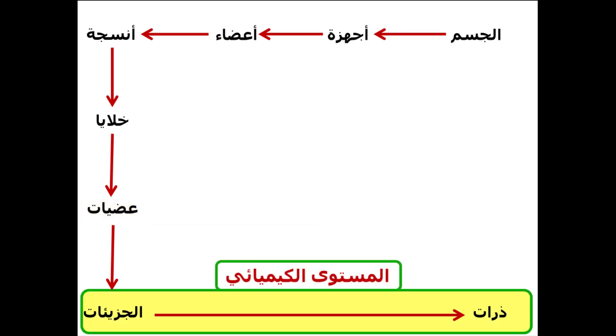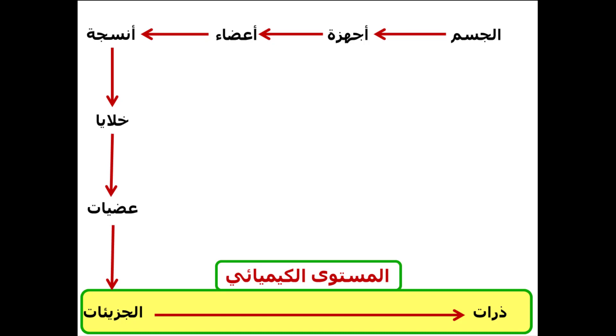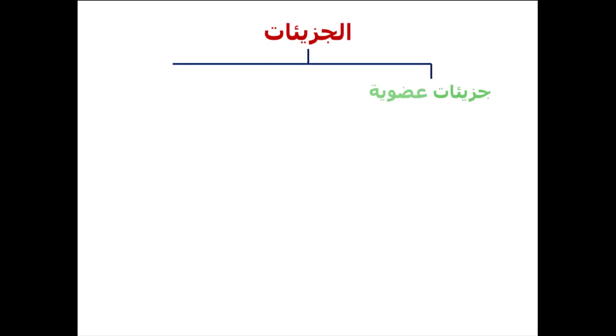من هنا احنا عاوزين نشوف إيه الجزيئات الكيميائية أو التركيب الكيميائي اللي في جسم الكائن الحي. هنقسم الجزيئات إلى نوعين: إما جزيئات عضوية، وإما جزيئات غير عضوية.